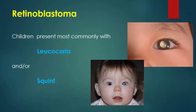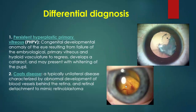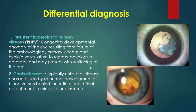The main presentation of retinoblastoma is leukocoria or a whitish pupil, while another presentation is squint of the affected eye. Differential diagnosis includes causes of leukocoria in children, such as persistent hyperplastic primary vitreous (PHPV), caused by failure of the embryological primary vitreous and hyaloid vasculature to regress, developing cataracts with whitening of the pupil. The second differential is Coats disease, a unilateral disease characterized by development of abnormal blood vessels behind the retina with retinal detachment, causing a picture resembling retinoblastoma.